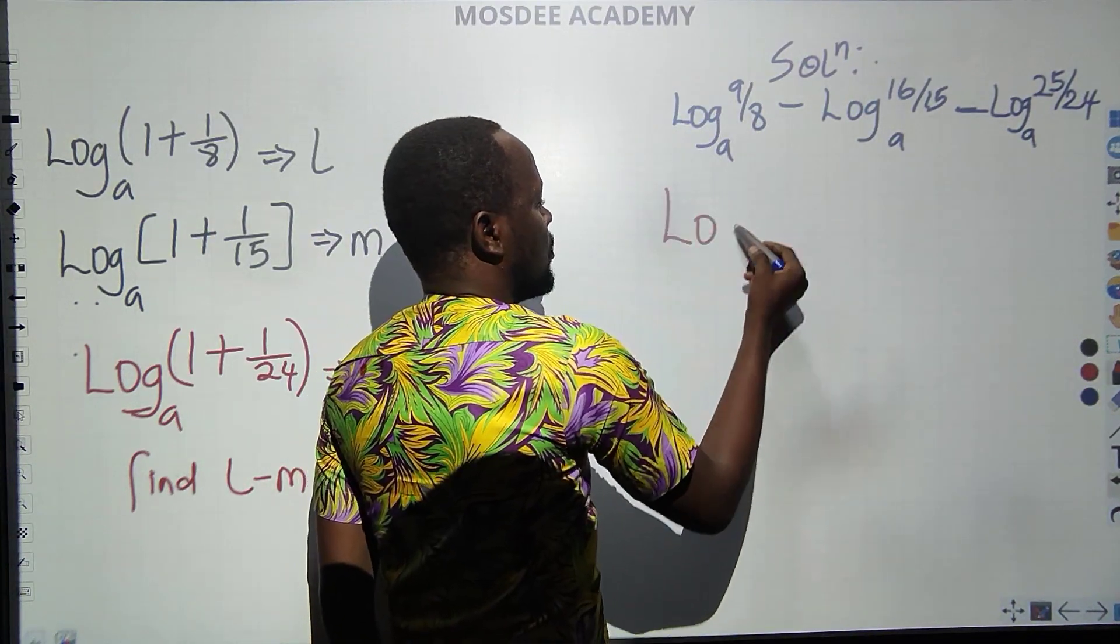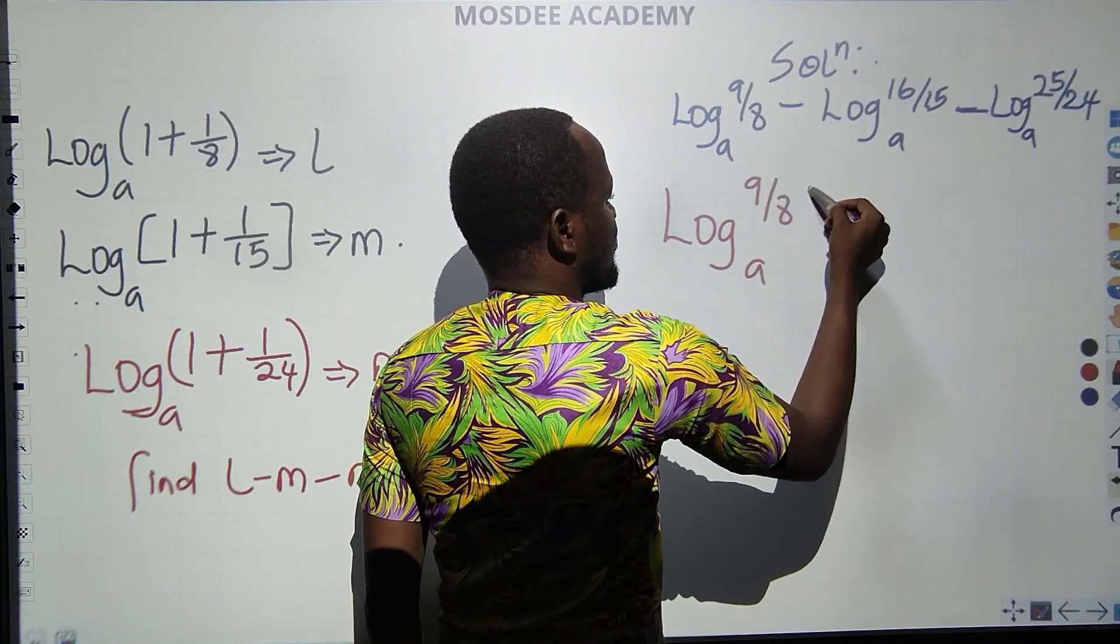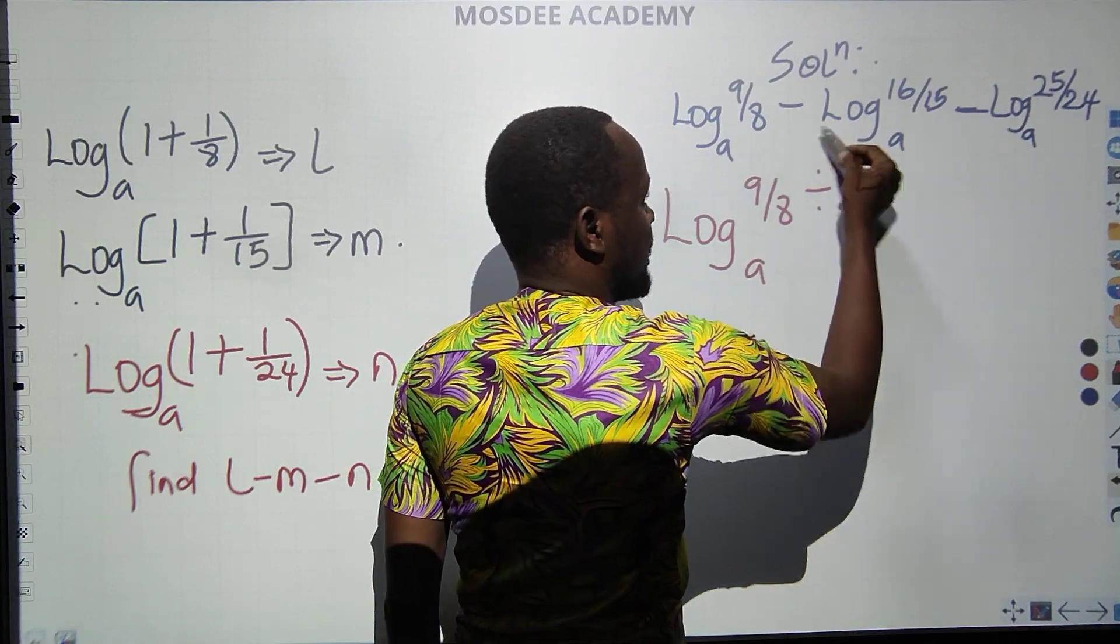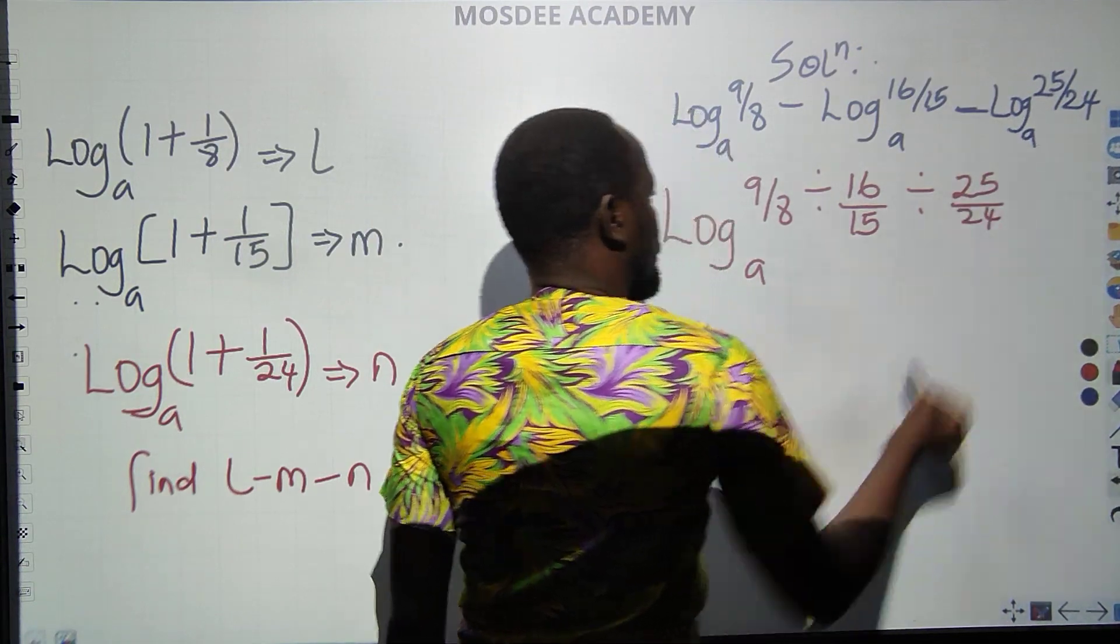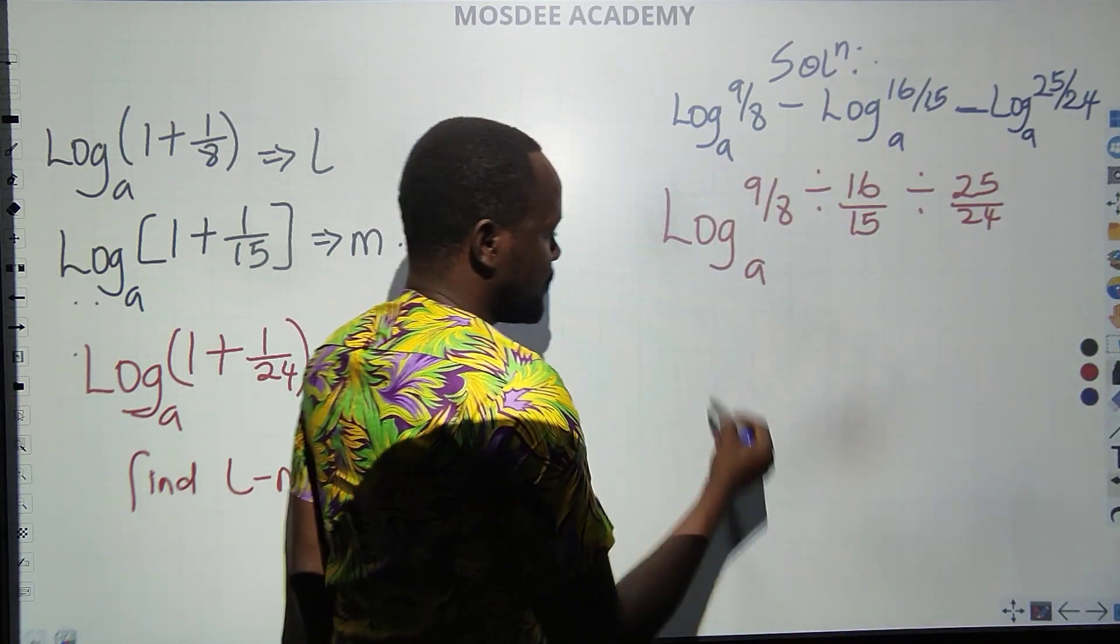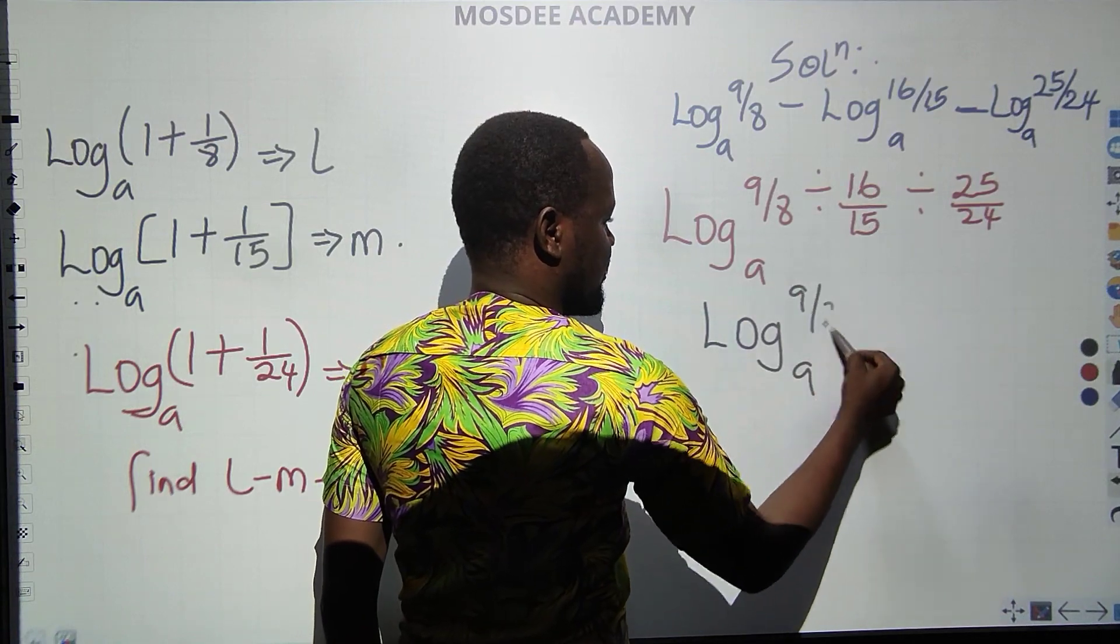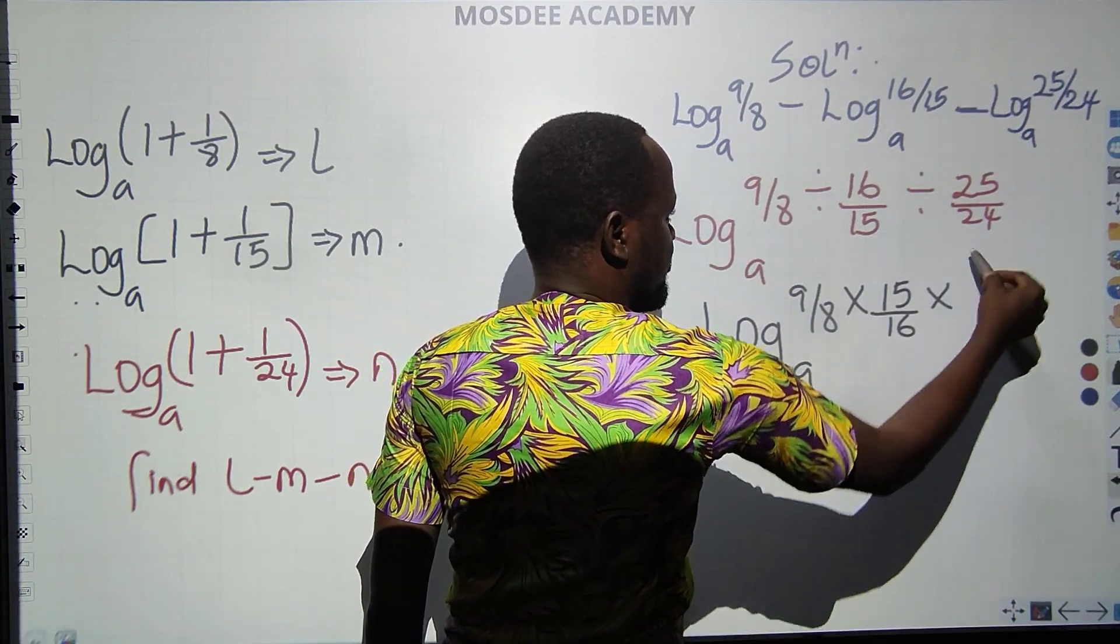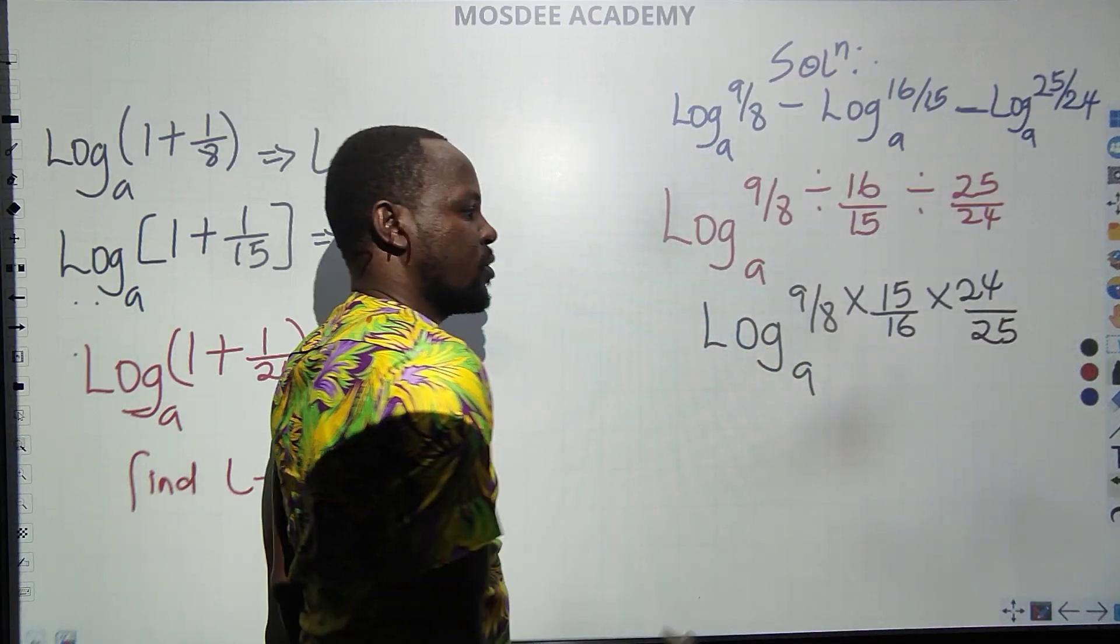We have our log, base A, 9 over 8, divided by 16 over 15, because minus is division, divided by 25 over 24. What do I know? I will turn division to multiplication. So let's do that. So we have log, base of A, 9 by 8, times flip this over, 15 by 16, times flip this over, 24 by 25.